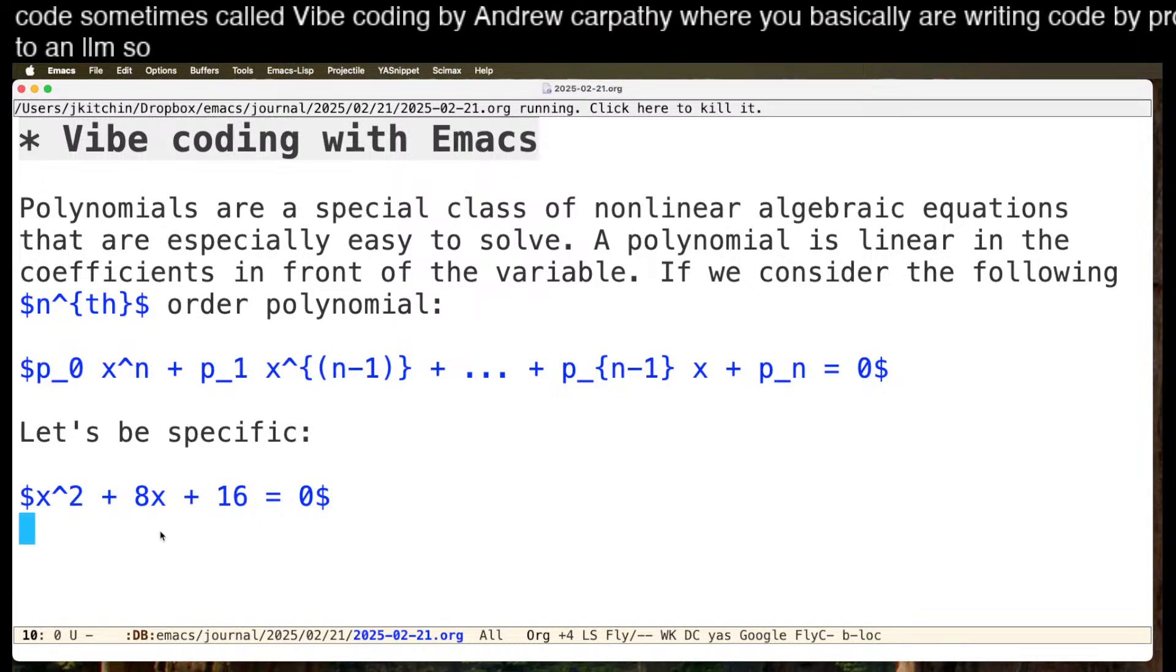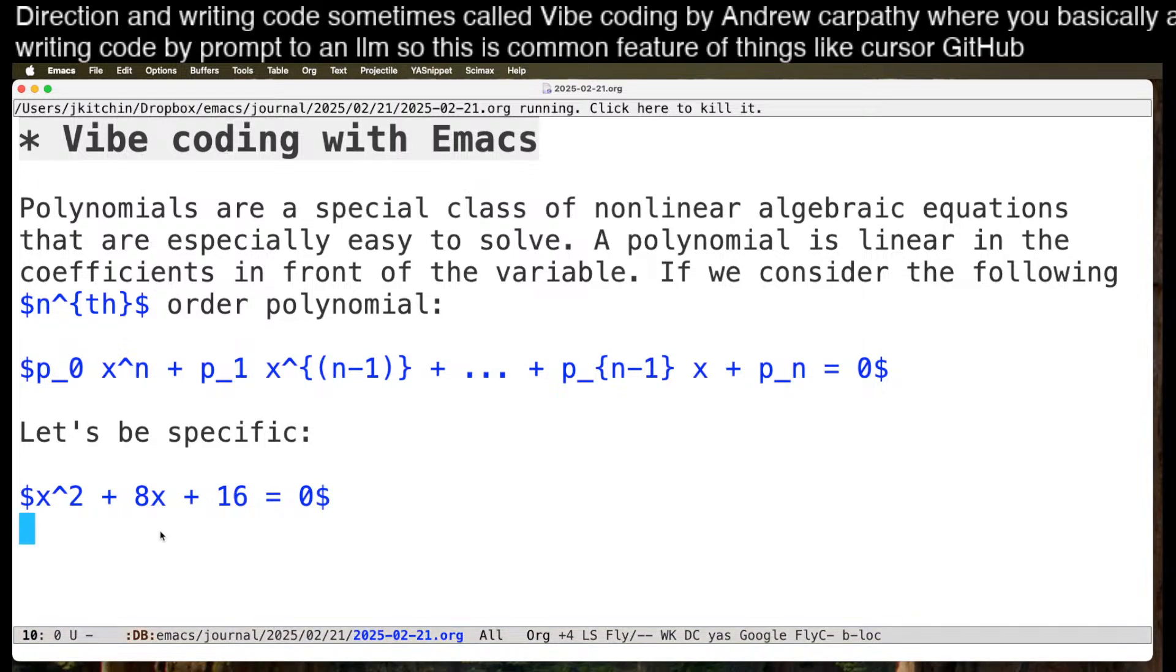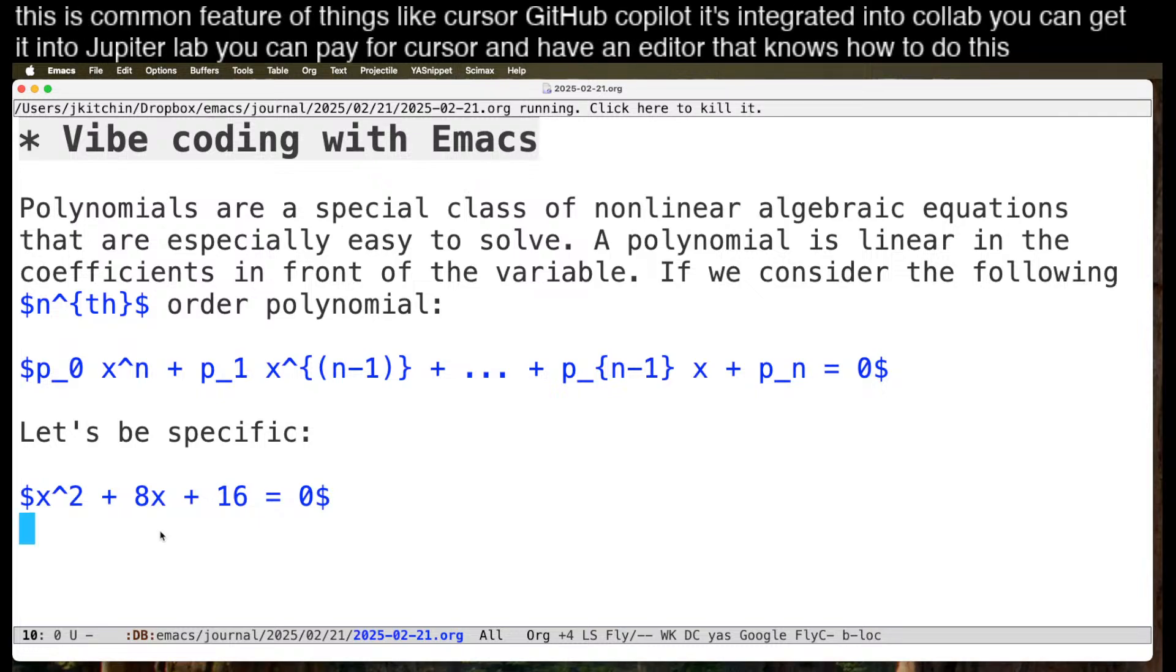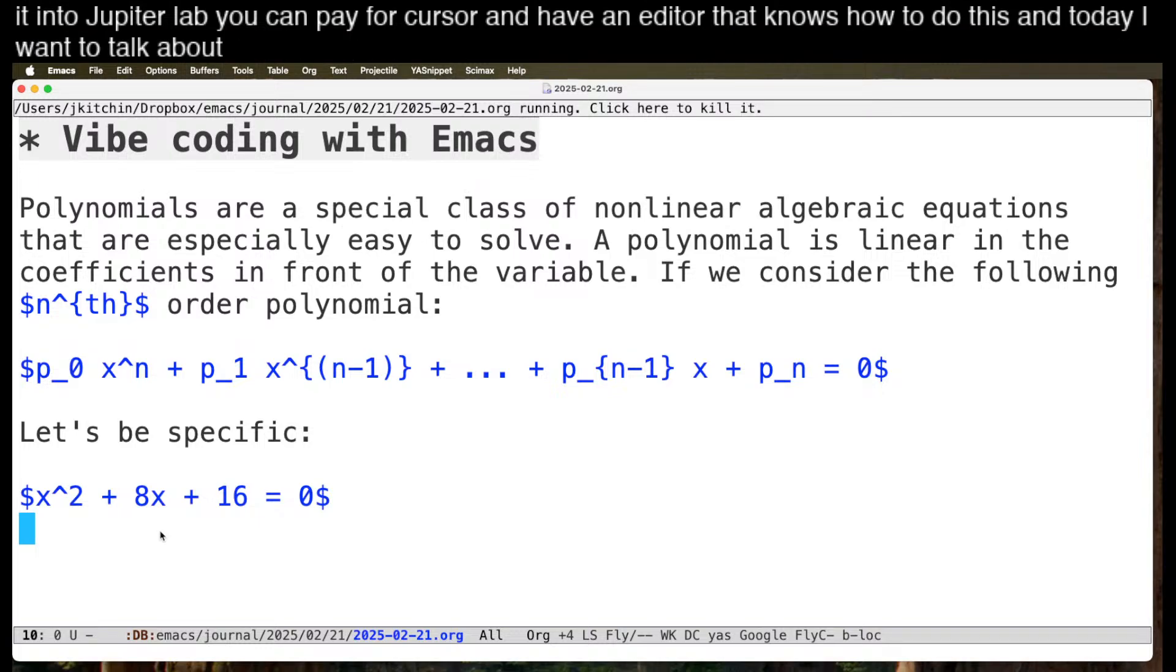So this is a common feature of things like Cursor, GitHub Copilot. It's integrated into Colab, you can get it into JupyterLab, you can pay for Cursor and have an editor that knows how to do this. And today I want to talk about doing this in Emacs, and especially doing it in Org Mode.